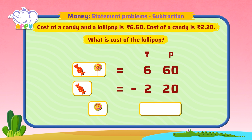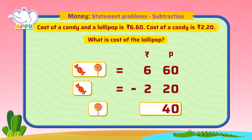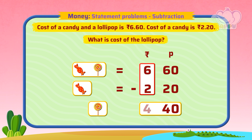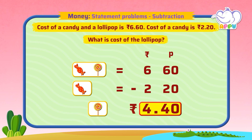Let's subtract the paise first. 60 minus 20 equals 40. Now let's subtract the rupees. 6 minus 2 equals 4. So the cost of the lollipop is 4 rupees 40 paise.